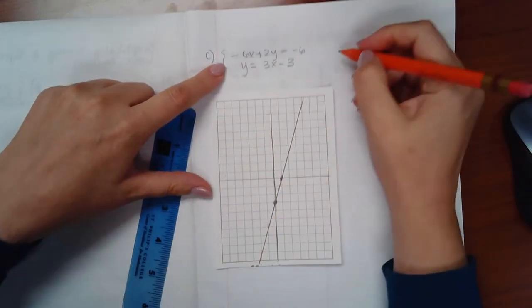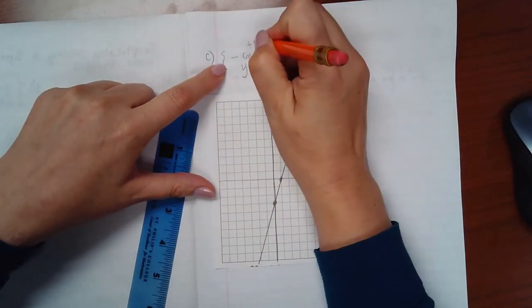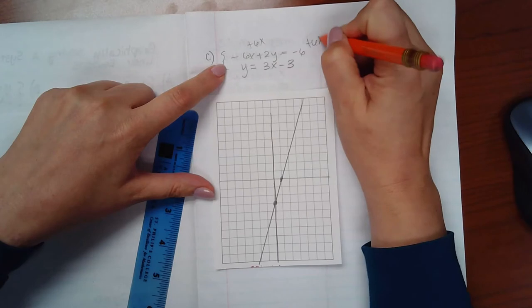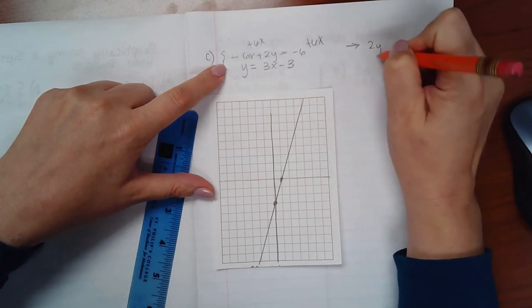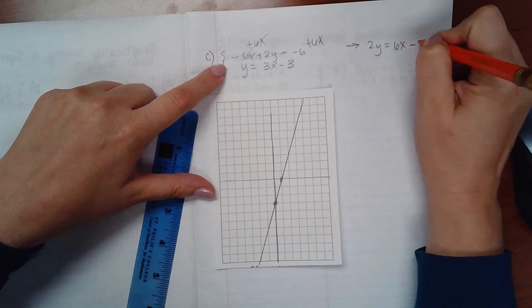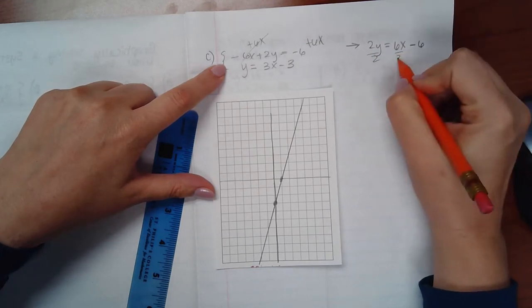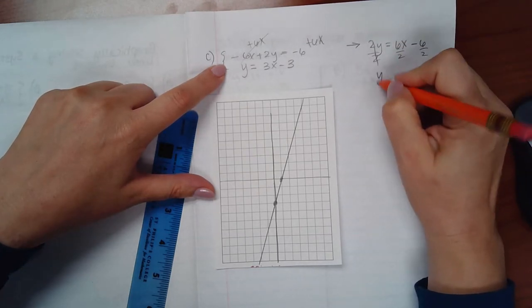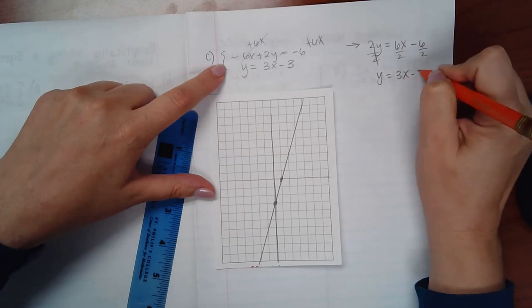And then the second one I do have to manipulate. So I'm going to add 6x to both sides of the equation, which is going to give me 2y, positive 6x minus 6, divide by 2, and I get y equals 3x minus 3.